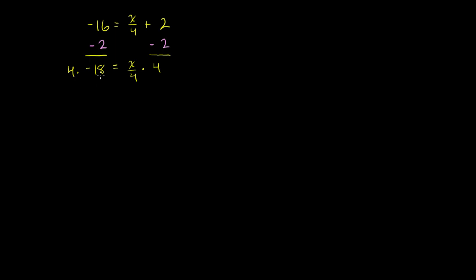So we get 4 times negative 18 is equal to x over 4 times 4. The x over 4 times 4 cancels out — you divide something by 4 and multiply by 4, you're just going to be left with x. On the other side, 18 times 4: 4 times 8 is 32, 4 times 1 is 4, plus 1 is 72. But this is negative 18 times 4, so it's negative 72.